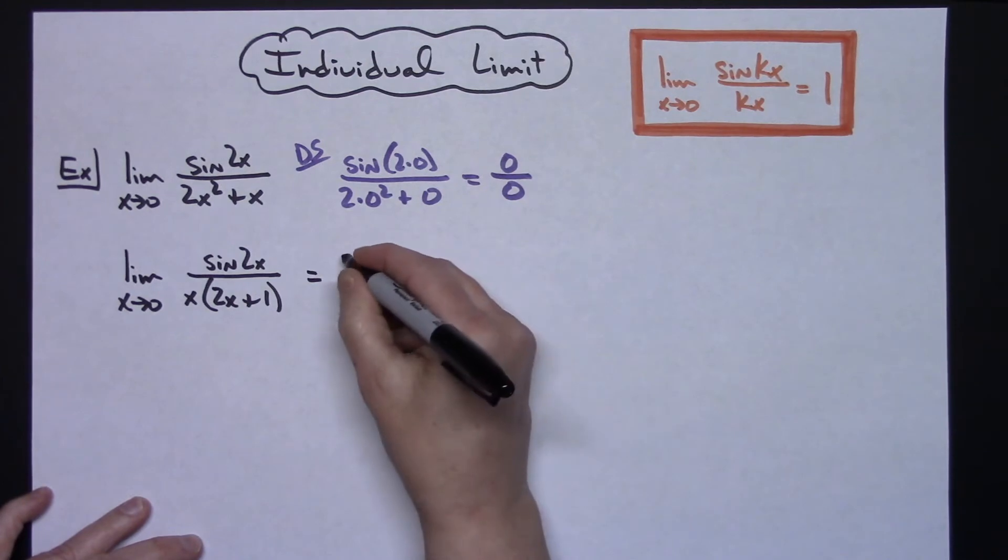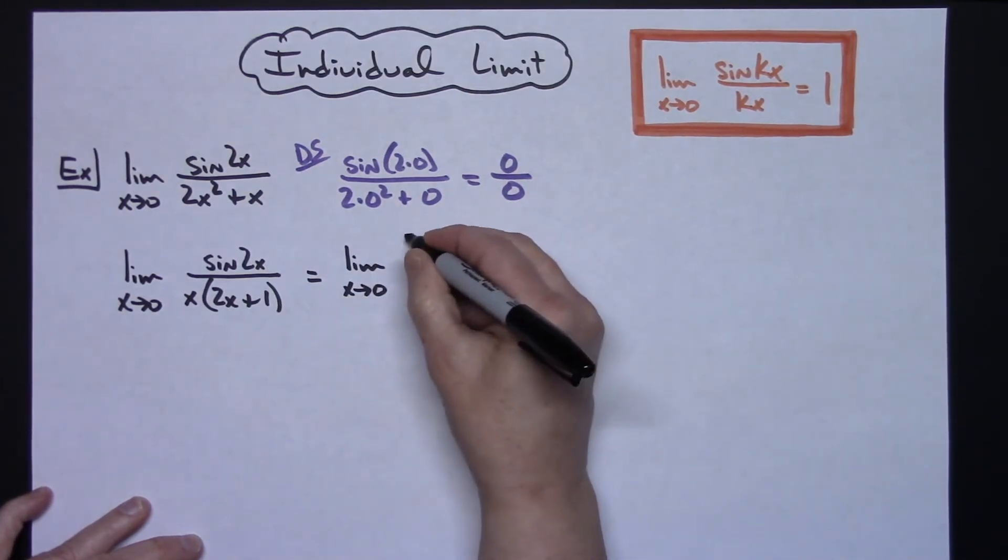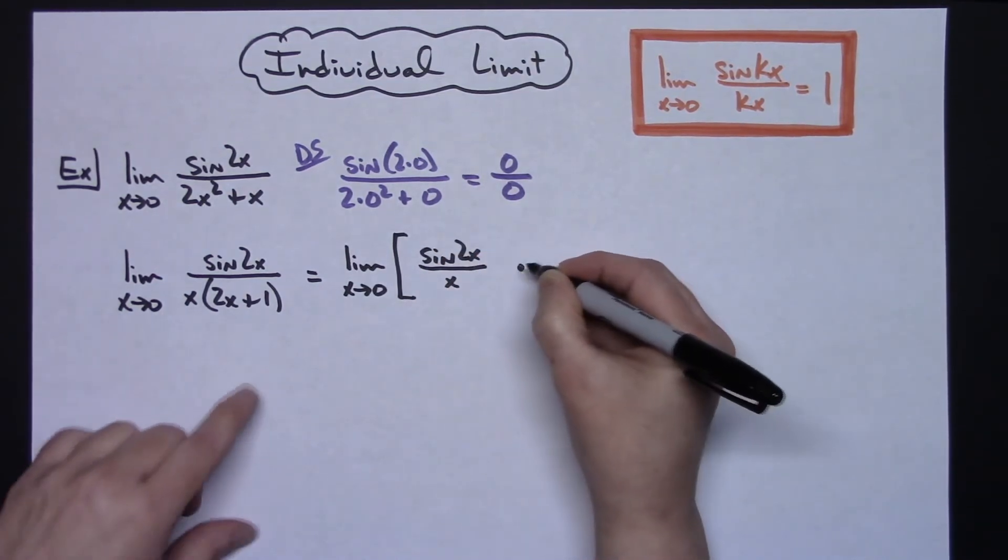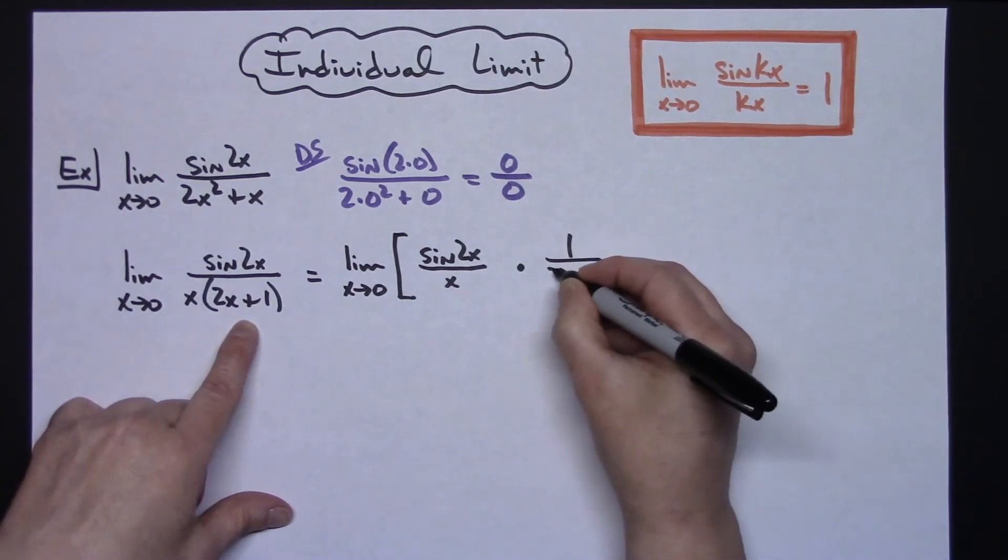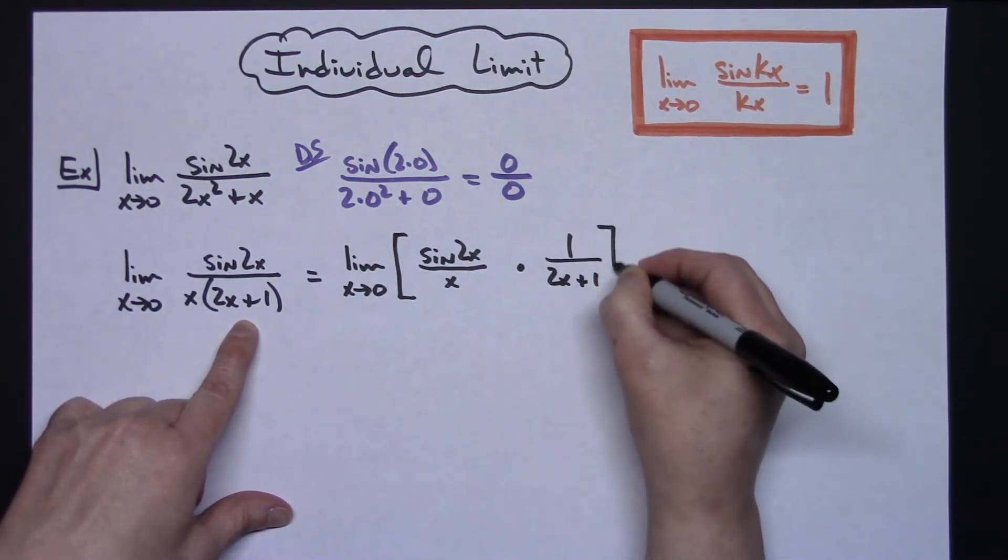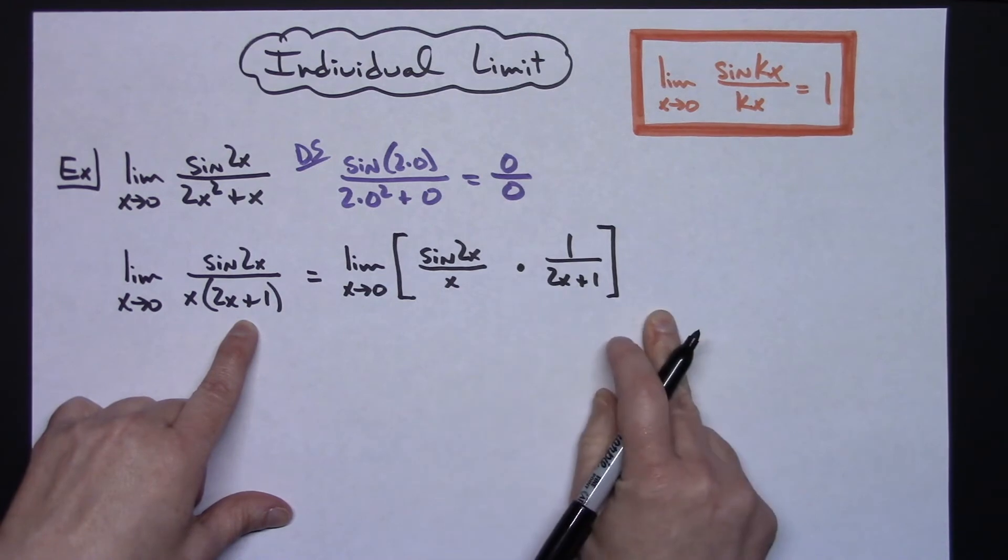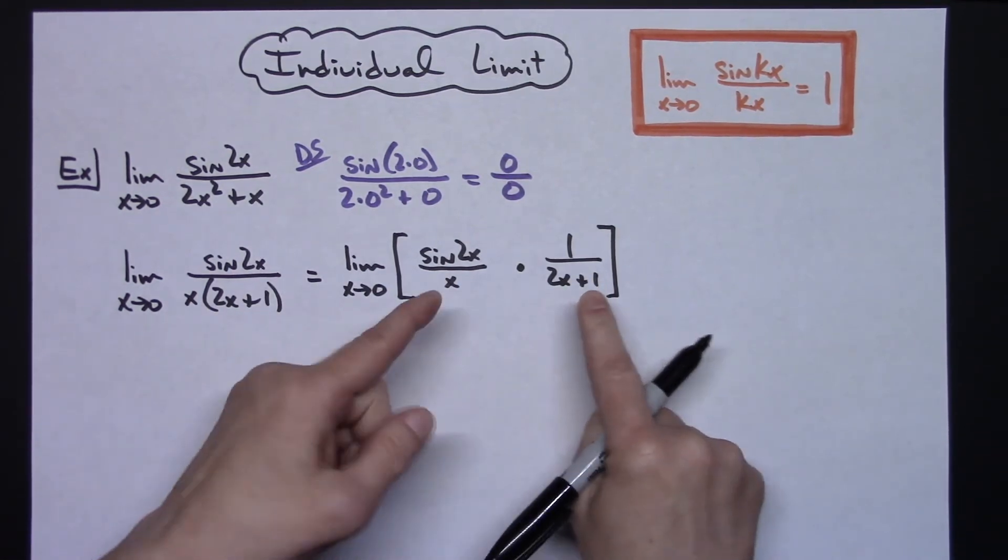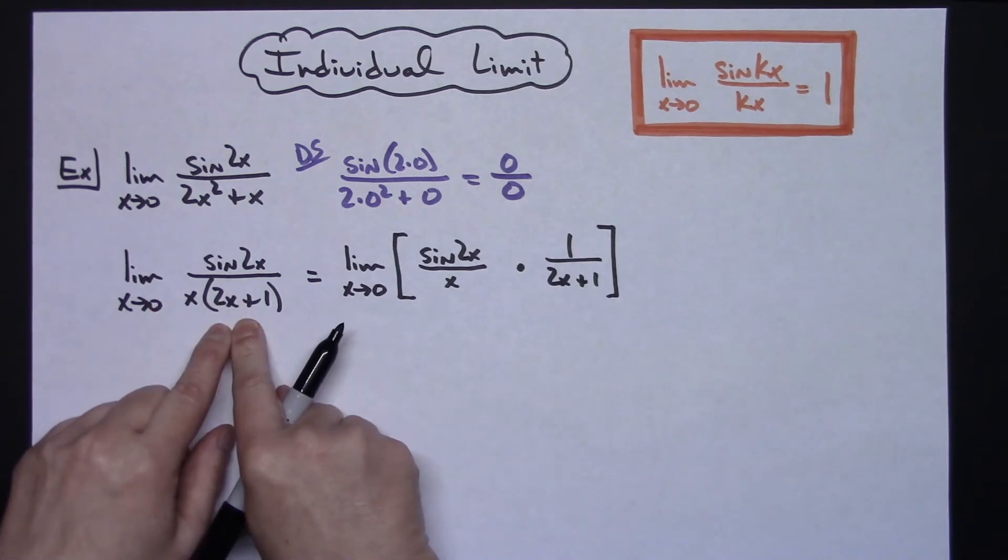So we're going to do the limit as x approaches 0. I'm going to have the sine of 2x over x times 1 over that 2x plus 1, the limit of this entire quantity. All I did is I took this and separated this. If I take these two fractions and multiply them back together I will end up with this. So that's a good check to make sure that you have an equivalent fraction there.